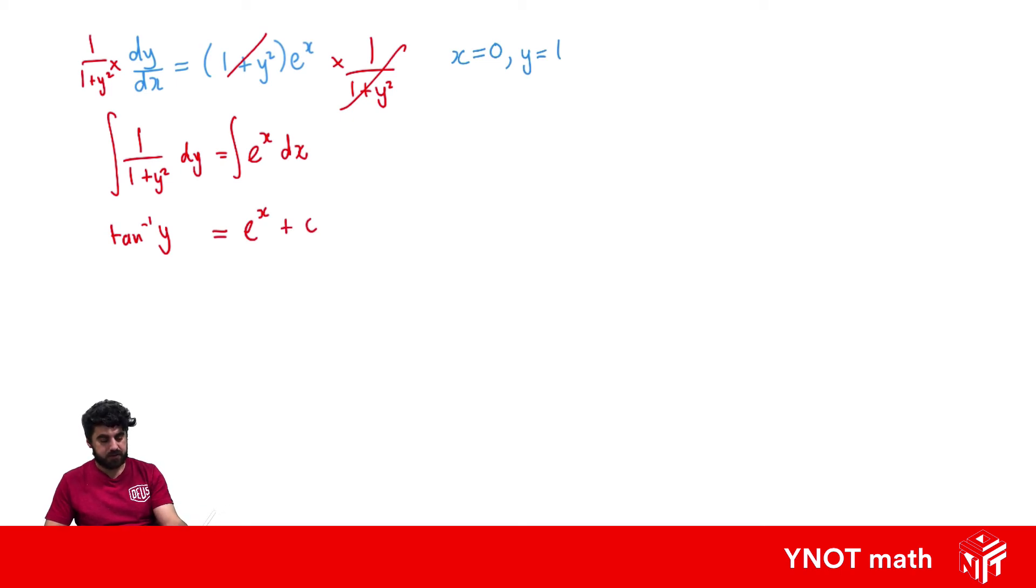And we know that when x is equal to 0, y is equal to 1. So let's just sub that in now. So we get the inverse tan of 1 equals e to the 0 plus c. Inverse tan of 1 is pi on 4. e to the 0 is 1 plus the constant. Minusing 1 from both sides gives c equals pi over 4 minus 1. So let's throw that back into our equation. So we get the inverse tan of y equals e to the x plus our constant, which is pi over 4 minus 1.